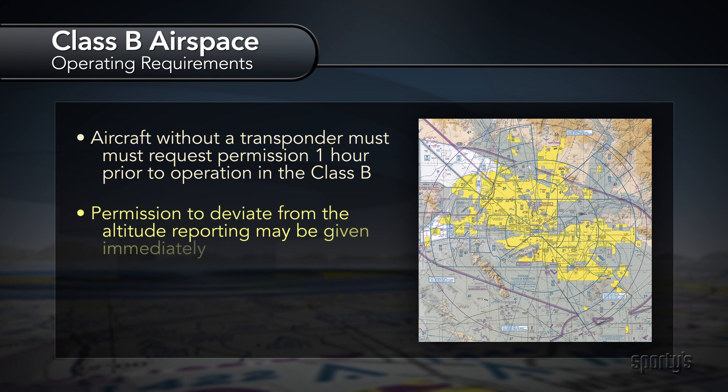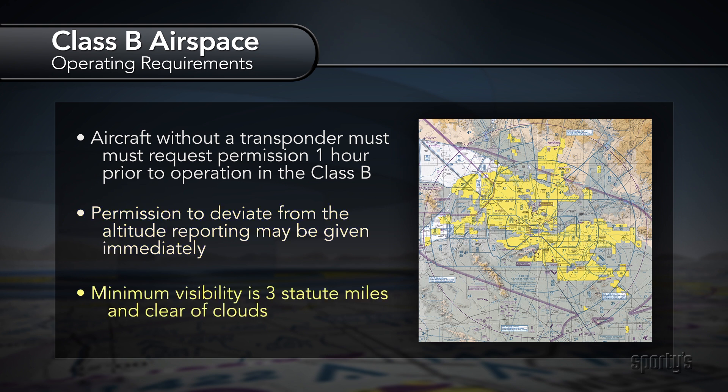Authorization to deviate from the altitude reporting requirement may be given immediately. The minimum VFR visibility in Class B is three statute miles and you must stay clear of clouds.